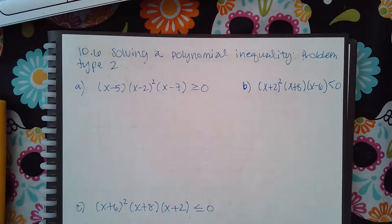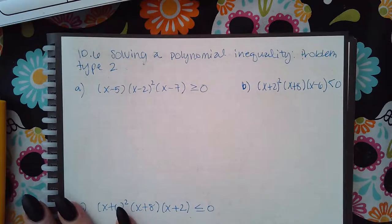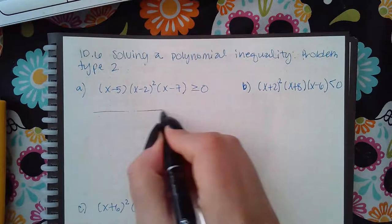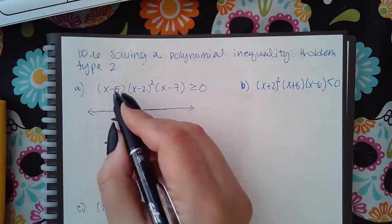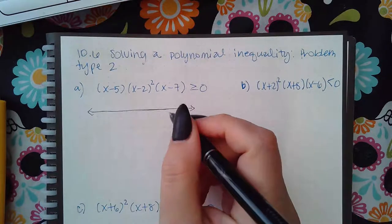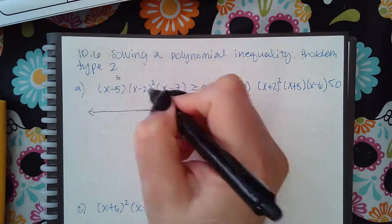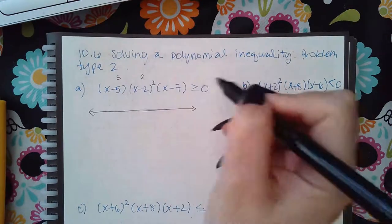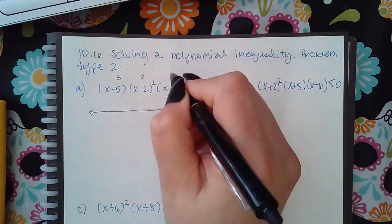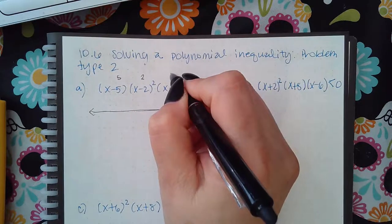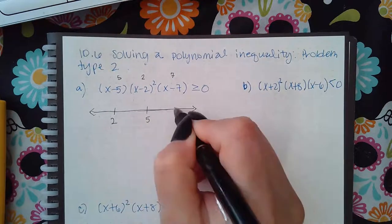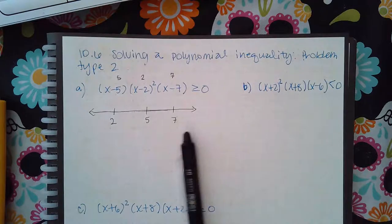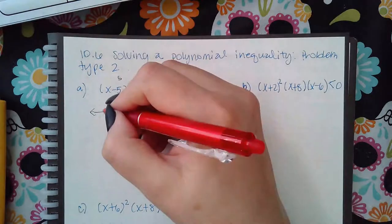Here we have solving a polynomial inequality, problem type 2. Just like before, I need to set up my intervals. When I set this factor equal to 0 I get 5, when I set this factor equal to 0 I get 2, and when I set this factor equal to 0 I get 7. Putting those in order, I can test the values 0, 3, 6, and 8 in each interval.